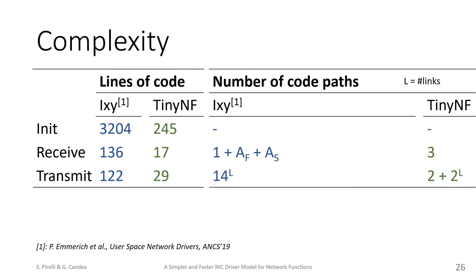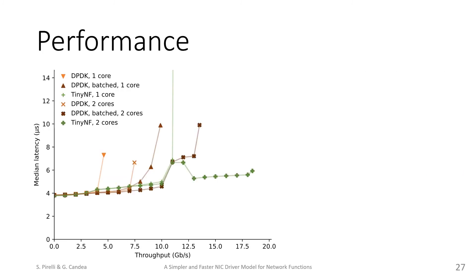In terms of paths, their driver is simpler than DPDK, but still has exponentially more paths than our driver. In terms of performance, here is one of the many graphs in our paper. It plots the throughput of the traffic policer on the x-axis, up to a maximum of 20 Gbps as we use two links, and the latency on the y-axis.